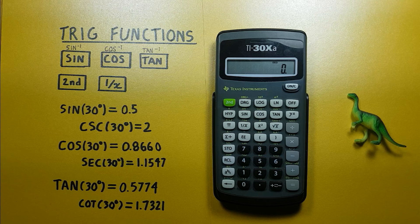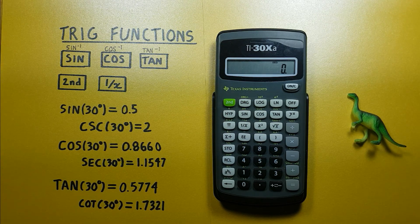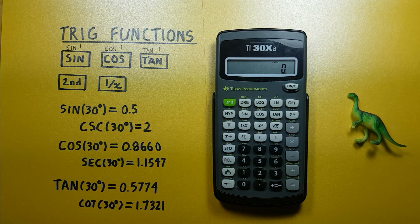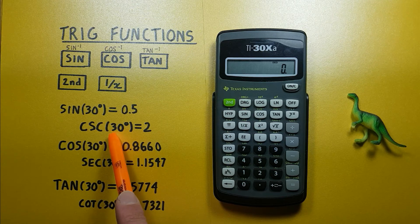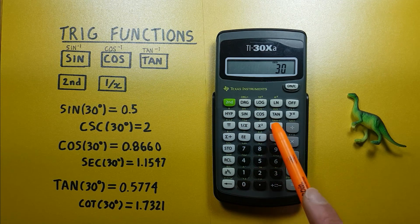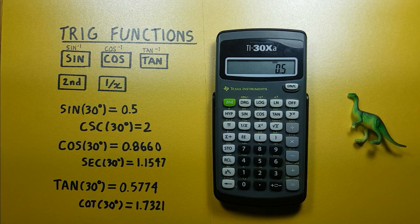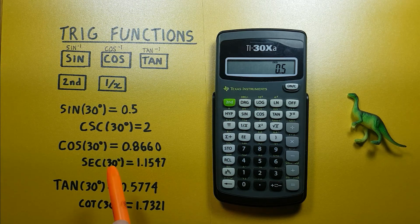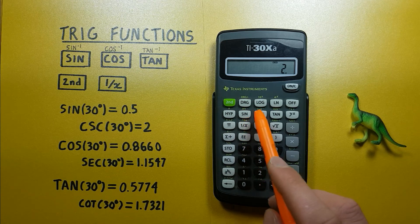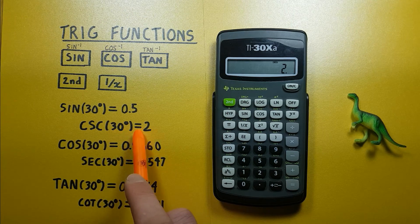But what if we wanted to find something like cosecant, secant, or cotangent? Well, to do that, all we have to really do is inverse the corresponding function. So if we wanted to find cosecant of 30 degrees, first we would do sine of 30 degrees. Same way as before, sine 30, and we get 0.5, and then what we want to do is inverse this with this 1 over x key and we see we get 2. So we know that cosecant of 30 degrees is equal to 2.